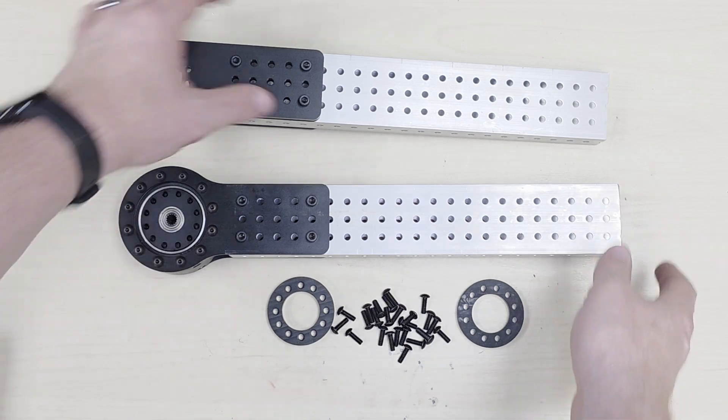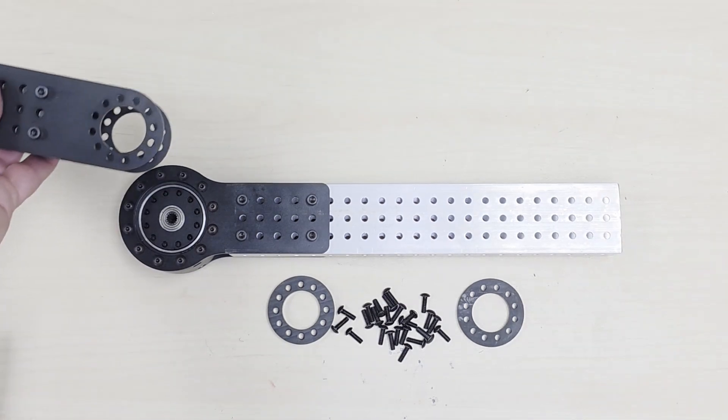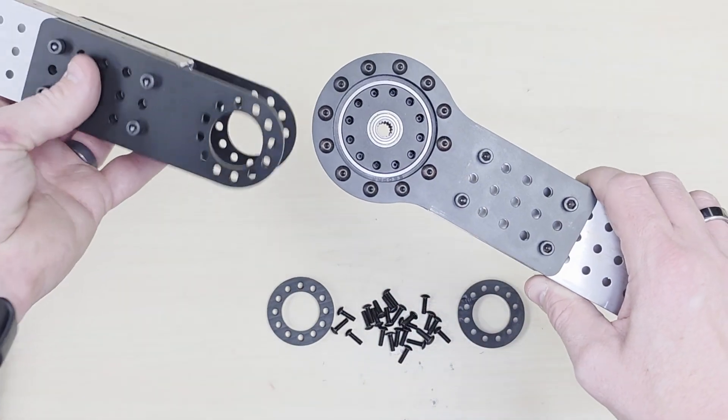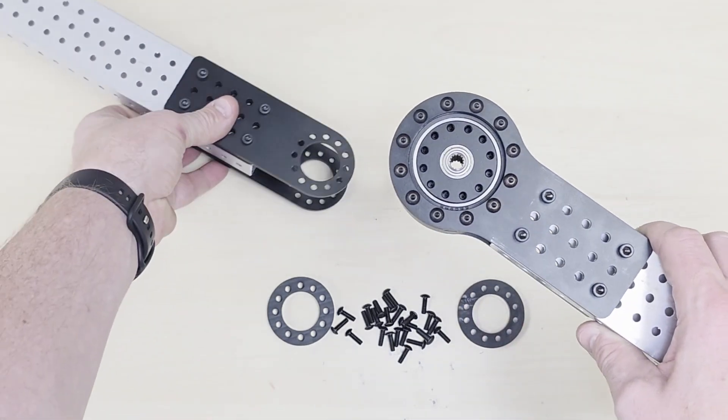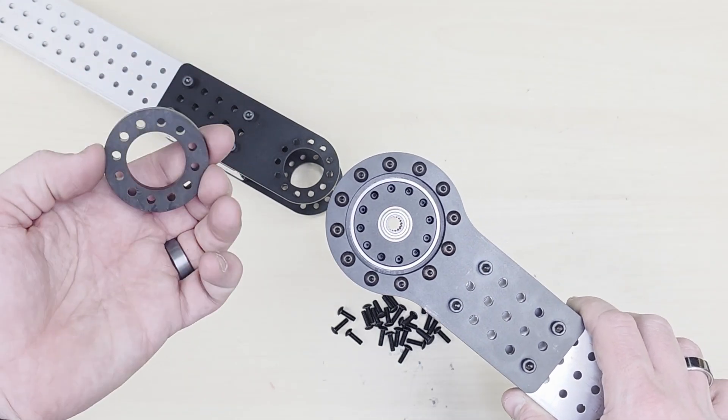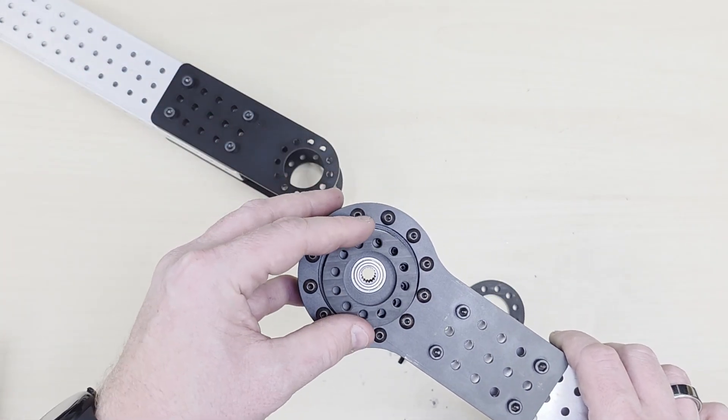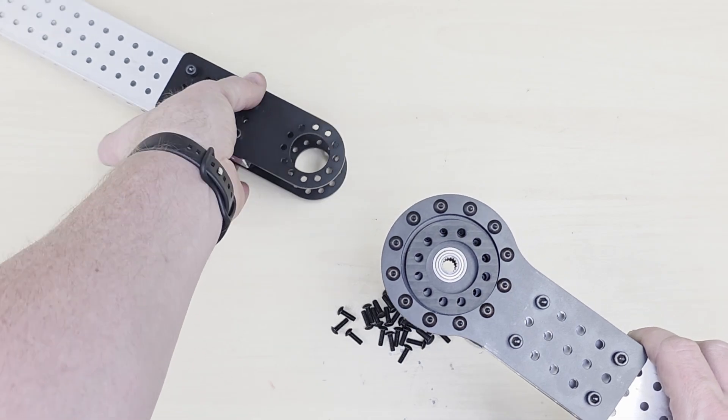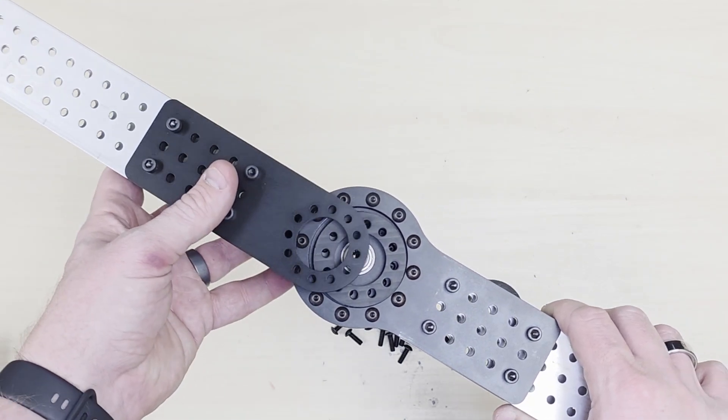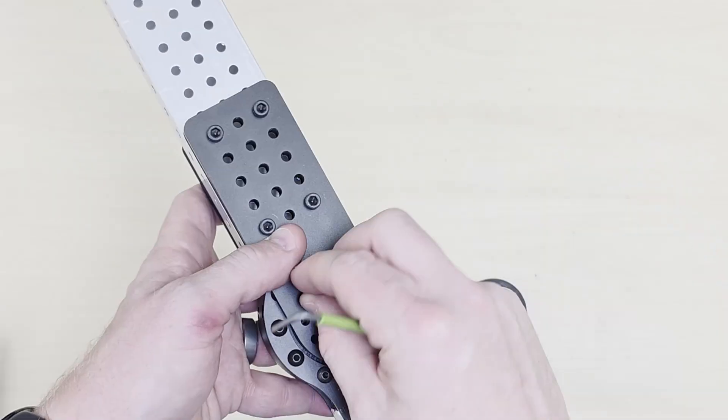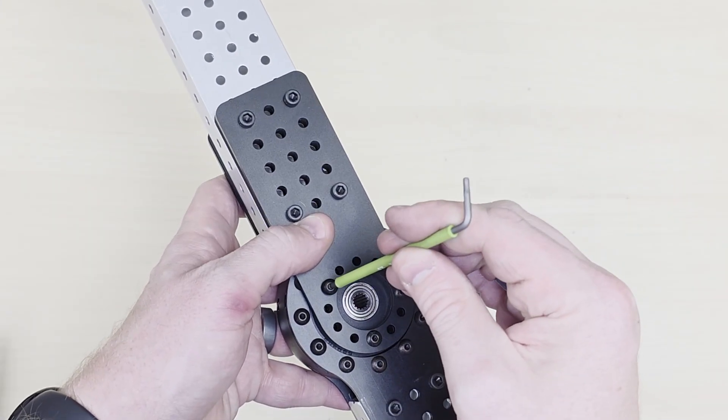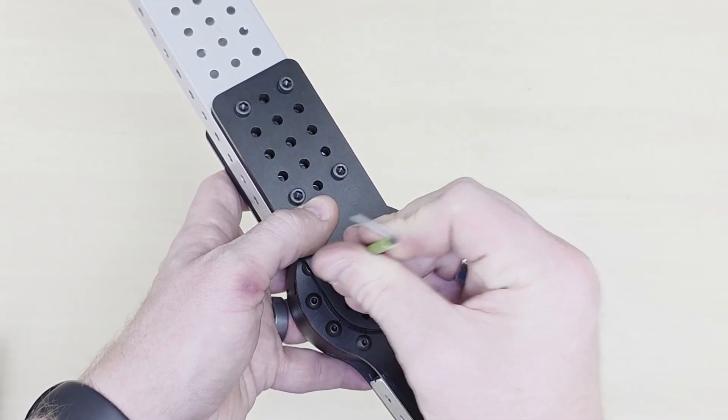Now we're going to join the two arms together. Take the arm that doesn't have the gearbox mounted to it, and it'll slip over the gearbox side. We have two Delrin spacers where the hole pattern will line up with the 1.5-inch hole pattern on the gearbox. Simply slip that over there and start to put the 1.5-inch long 8-32 button heads into those holes.